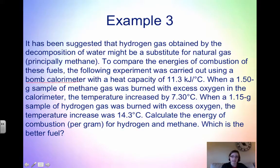It's in a bomb calorimeter with a heat capacity of 11.3 kilojoules per degree Celsius. When a 1.50 gram sample of methane was burned with excess oxygen in the calorimeter, the temperature increased by 7.30 degrees Celsius. When a 1.15 gram sample of hydrogen gas was burned, the temperature increase was 14.3 degrees Celsius. Calculate the energy of combustion per gram for hydrogen and methane, and which is a better fuel.